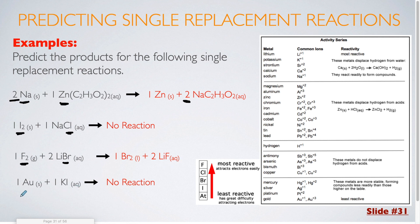In our final example here, we have gold, which is the element by itself. Since gold is a metal, I'm going to compare it to the other metal, which is potassium. Gold is at the very bottom of the list — it is the least reactive, so there is no way that it is powerful enough to kick potassium out of that compound. So this is going to be a no reaction.